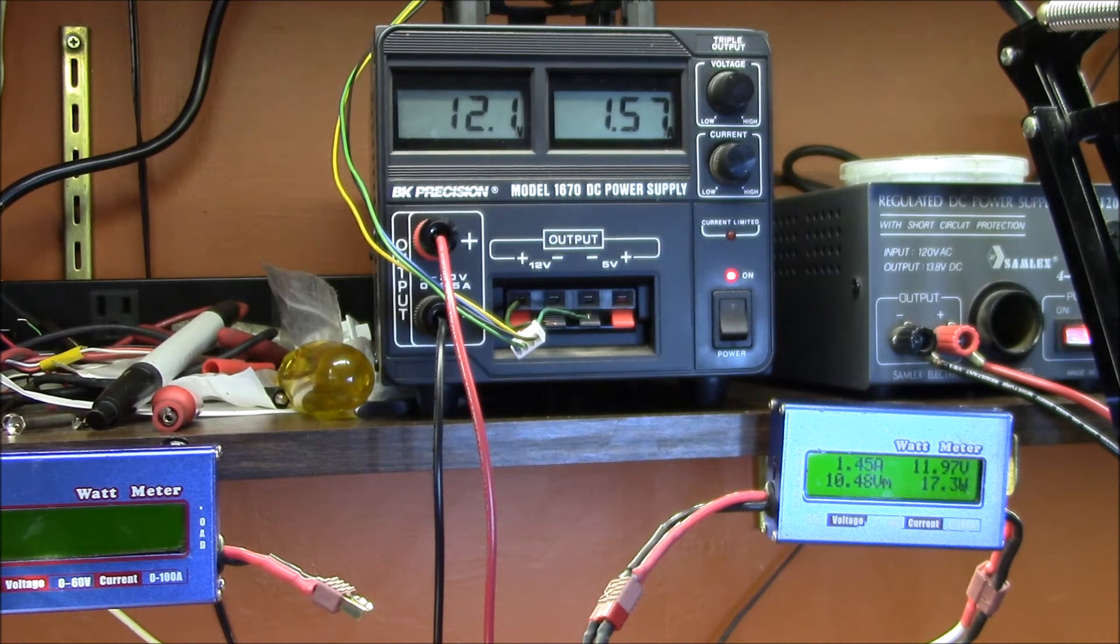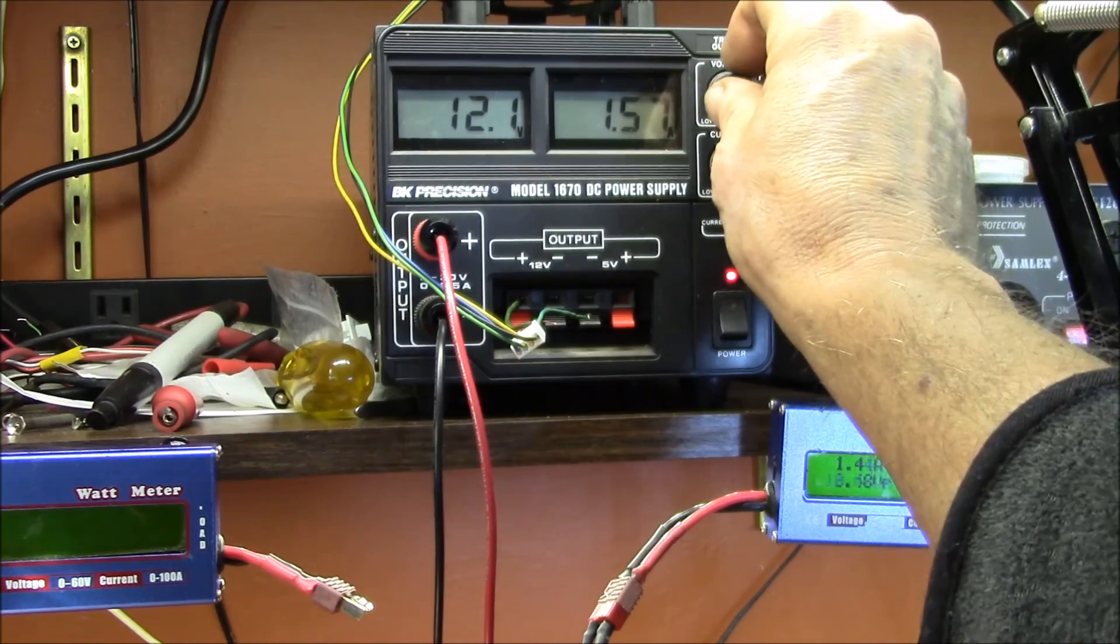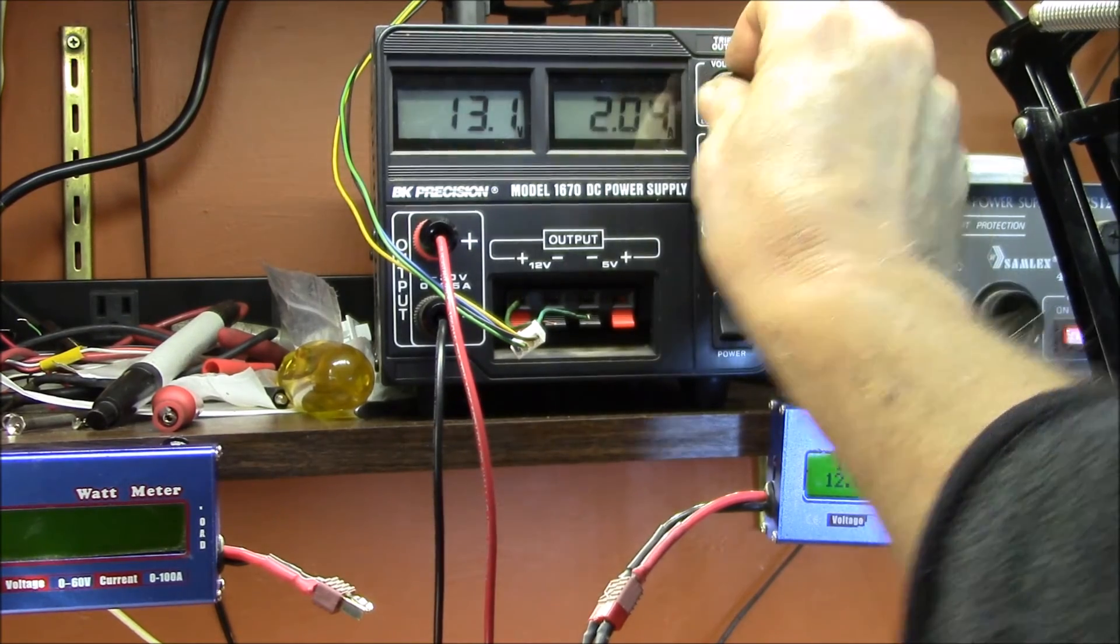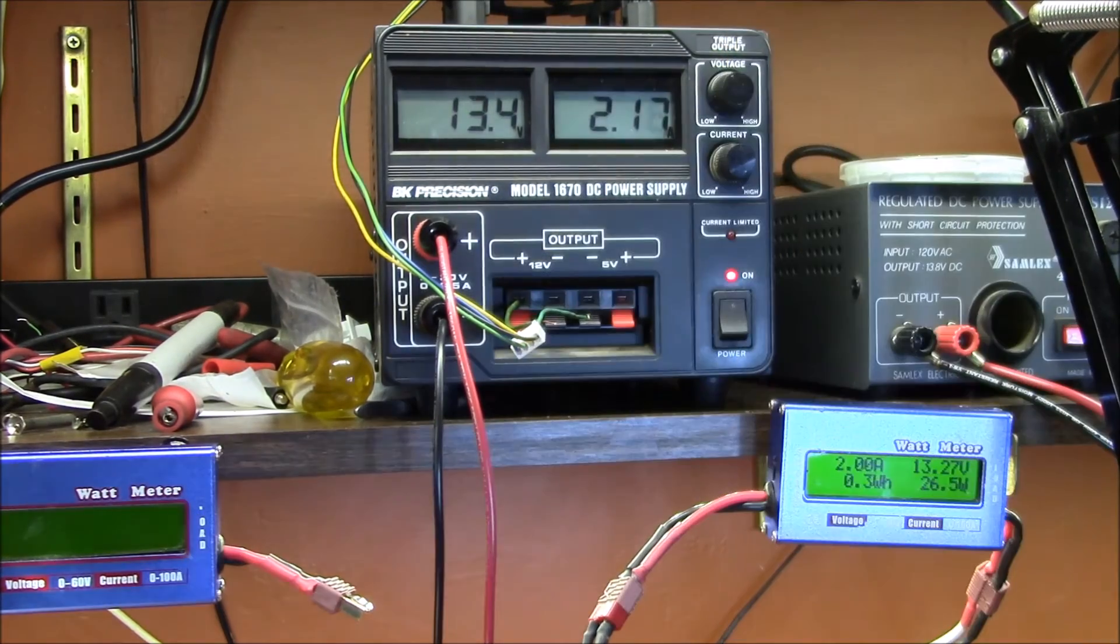So I'm not sure of the exact 5050 SMD emitters that are used on this particular strip, but 20 milliamps is a typical maximum continuous rating. So if we go up here to about 2 amps, that's 20 milliamps per segment. There's a 3 volt drop across a 150 ohm resistor. And it takes about 13 and a quarter volts to hit the 20 milliamp current.